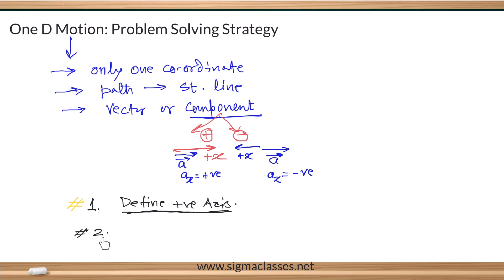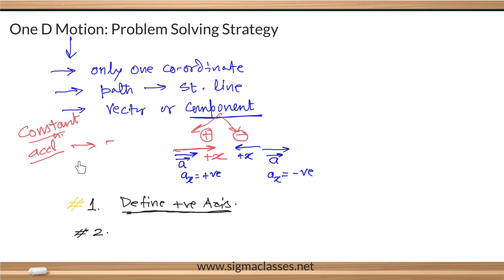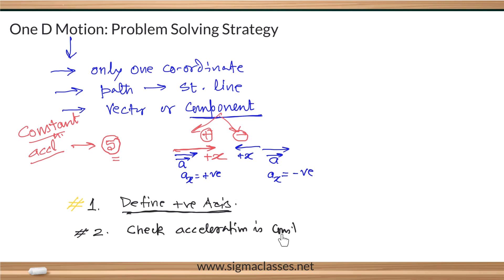The second step: you know some formulas for one-dimensional motion. When can those formulas be used? When the acceleration is constant. So step 2 should always be: check whether acceleration is constant or not.